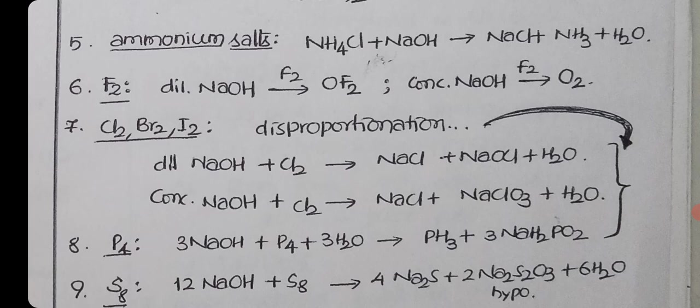Chlorine, bromine, iodine all show the same reaction. These reactions are called disproportionation reactions. Disproportionation means one atom undergoes both oxidation and reduction. Here chlorine undergoes oxidation and reduction. When taking dilute NaOH, chlorine turns into Cl minus and Cl plus. With hot and concentrated NaOH, chlorine turns into Cl minus and Cl plus 5. You can see: dilute NaOH gives NaCl and NaOCl; concentrated NaOH gives NaCl and NaClO3. Same reaction for bromine and iodine also.